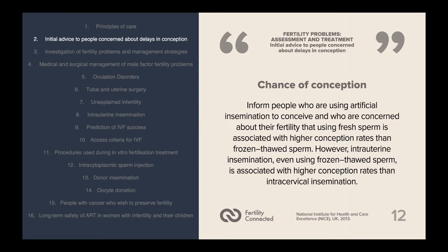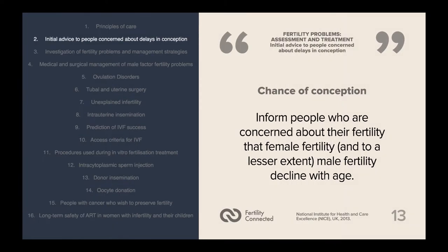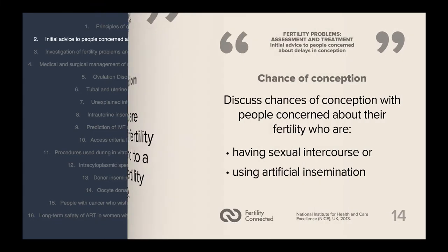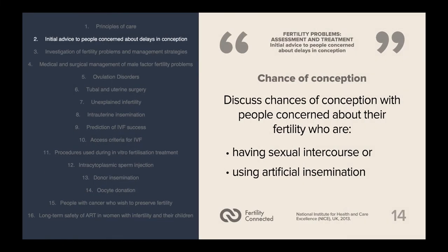Inform people using artificial insemination that using fresh sperm is associated with a higher conception rate than frozen-thawed sperm. However, intrauterine insemination, even using frozen-thawed sperm, is associated with higher conception rates than intracervical insemination. Inform people that female fertility, and to a lesser extent male fertility, declines with age, and discuss the chances of conception with people who are having sexual intercourse or using artificial insemination.